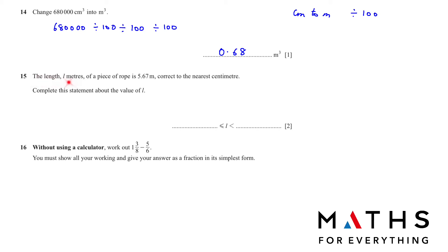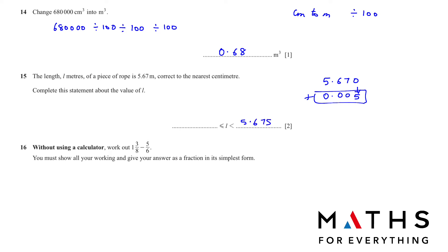Question 15: the length L metres of a piece of rope is 5.675, correct to the nearest centimetre. Complete the statement about the value of L. Write the number and consider the rounding precision — 0.005. Add this to the number to get the upper bound: 5.675 + 0.005 = 5.680. Subtract to get the lower bound: 5.675 − 0.005 = 5.665. So one time you add and one time you subtract.